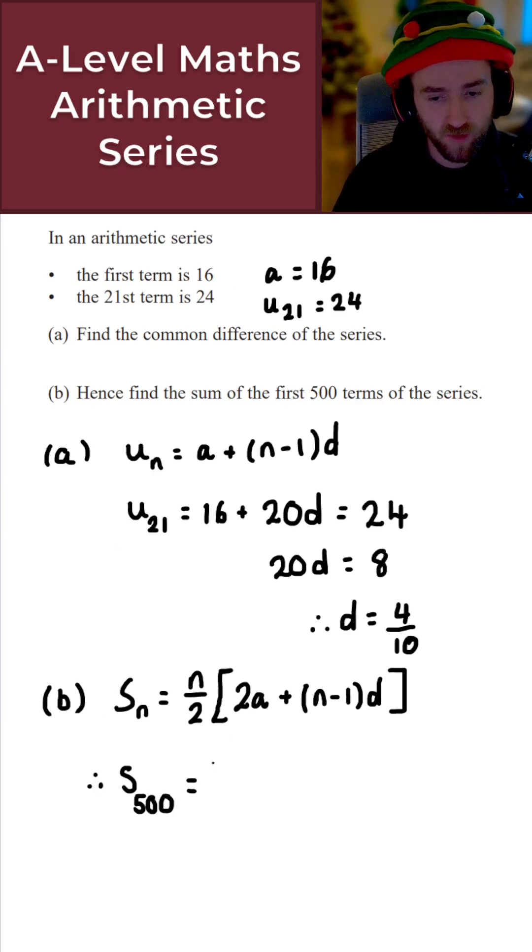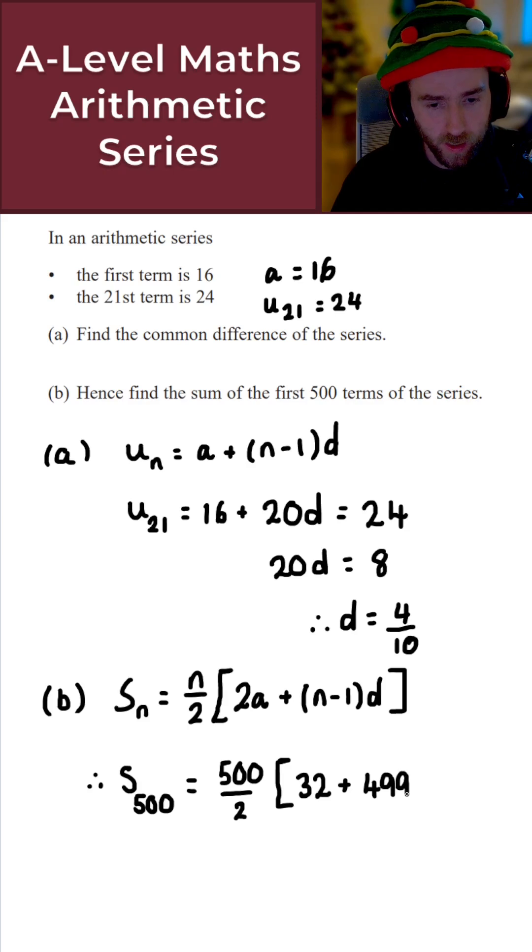In that case, the sum of the first 500 terms is equal to 500 over 2, so n here is 500, times it by 2a, so that's two lots of 16 which is 32, plus then n again is 500 so 499 times d here which is 4 over 10, so 499 times 4 over 10.